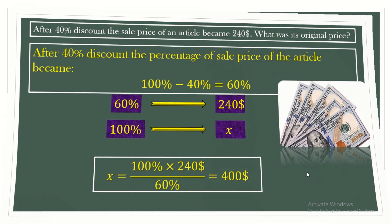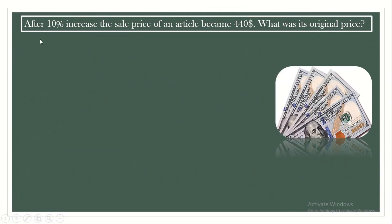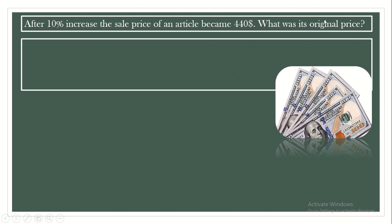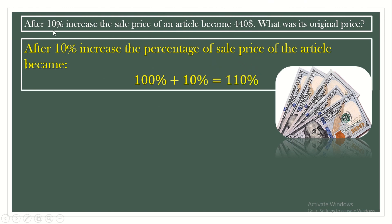Another question. After a 10% increase — and increase means plus — the sale price of an article became $440. What was its original price? We have the sale price, which is $440. To find the original price, we need the percentage of the sale price. The original price is 100%, and it increased by 10%, so 100% plus 10% gives us 110%. The percentage of the sale price, which is $440, is 110%.